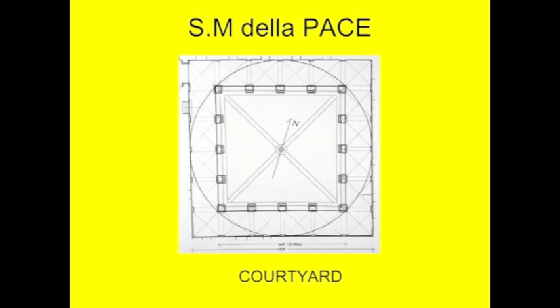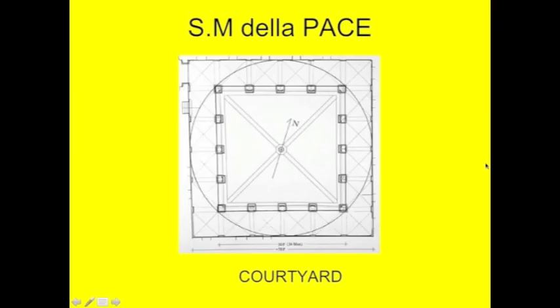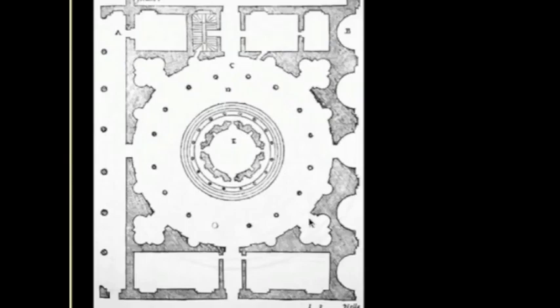One of Bramante's first projects when he got to Rome — when he left Milan and went down to Rome — was a courtyard for a convent called Santa Maria della Pace. The geometrical big idea here was pretty much a circle in a square — it's not difficult to see that. Bramante is building an ideal form. In many ways this is strongly related to his project for the Tempietto — the one that didn't get built with all the concentric rings — where not only an individual object but an entire space is organized by ideal geometry.